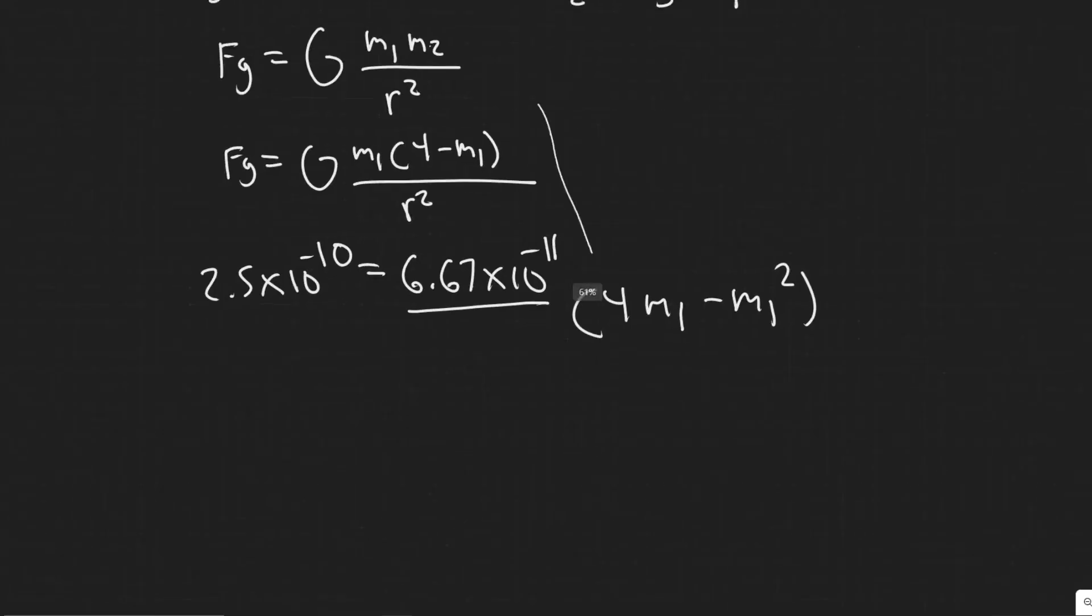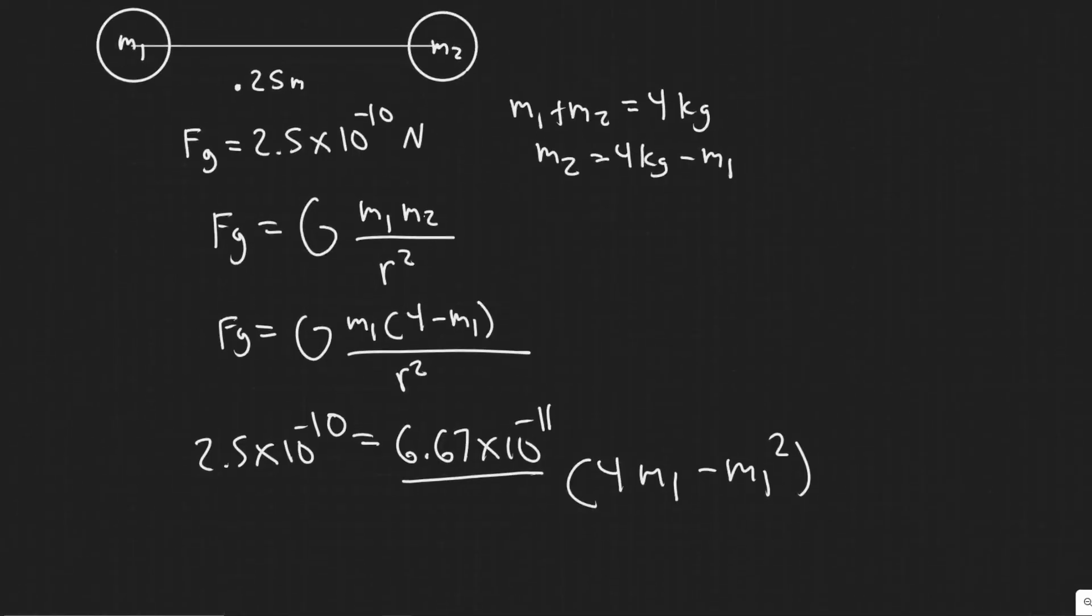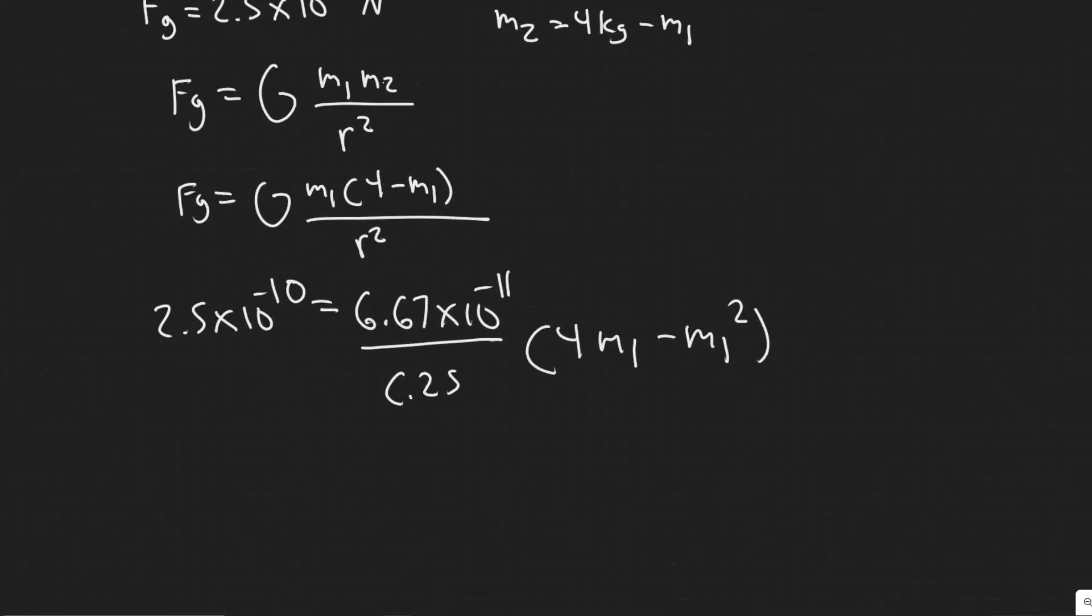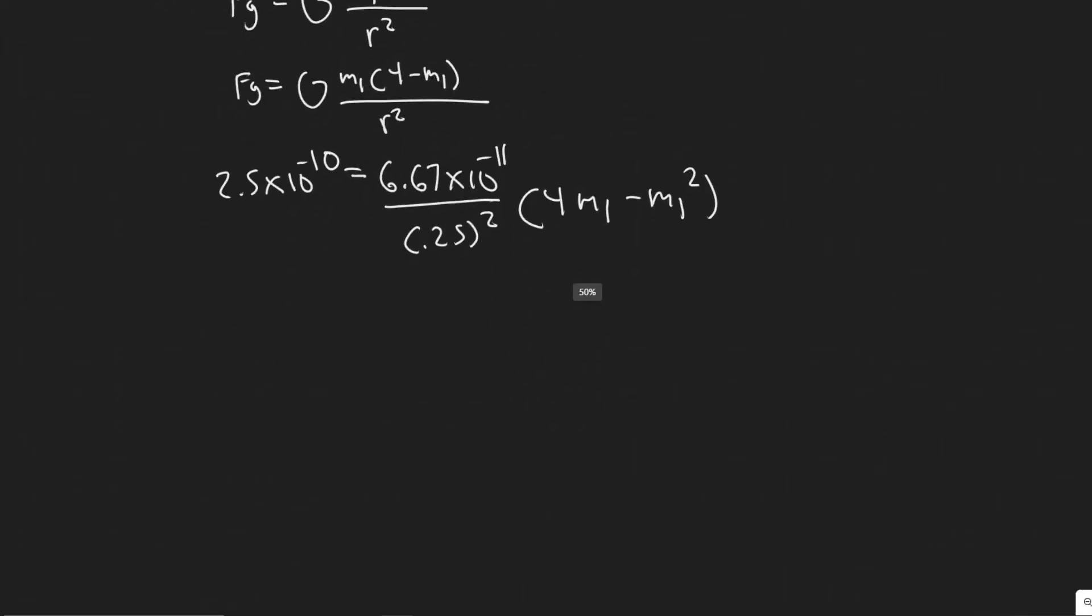And then we have 4 times m1, 4m1 minus m1 squared. So all I did was multiply this out. And now let me actually plug in r squared. So r is the distance between them and they tell us it's going to be equal to 0.25 meters. So this is just 0.25 squared.